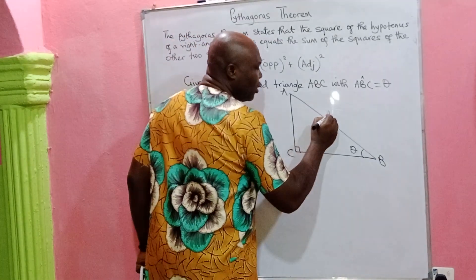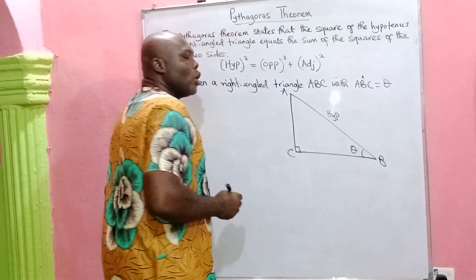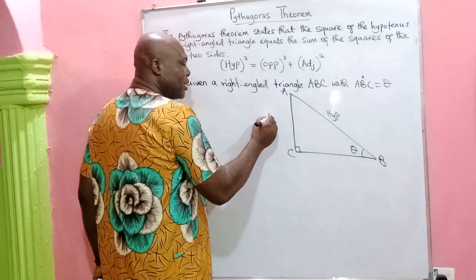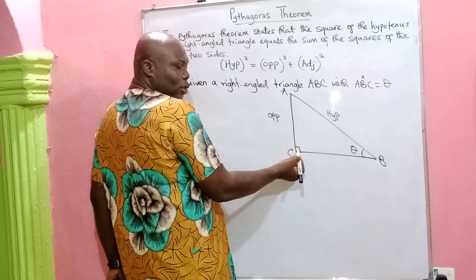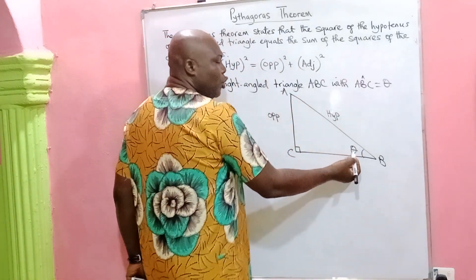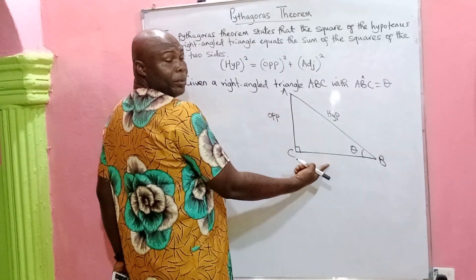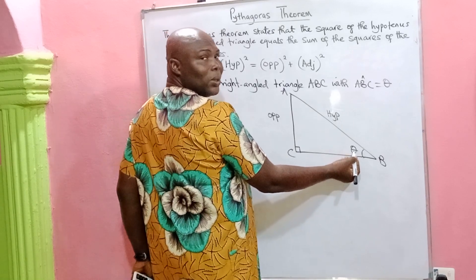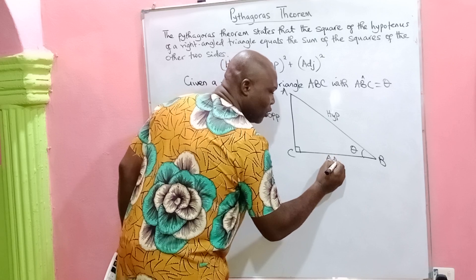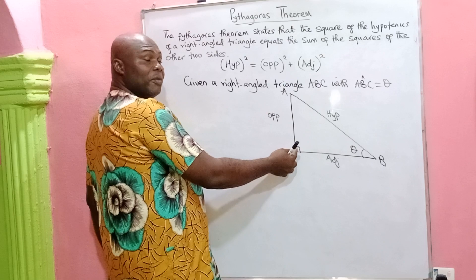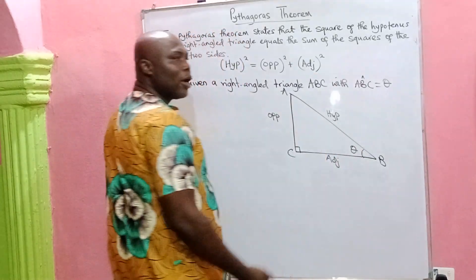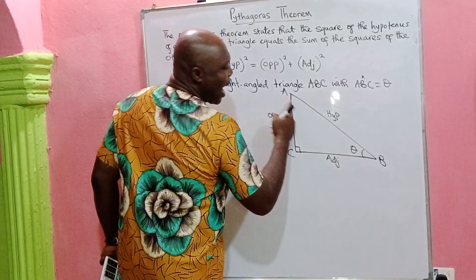The hypotenuse — marked as 'hyp' — is the longest side. The side opposite to the given angle theta is called the opposite. The side that is directly opposite to the right angle is the hypotenuse, which is the longest side of the right-angle triangle. The side opposite to theta is the opposite, and the other side adjacent to theta is called the adjacent.